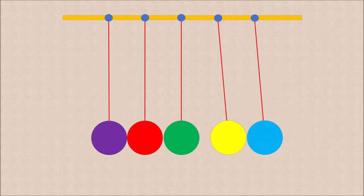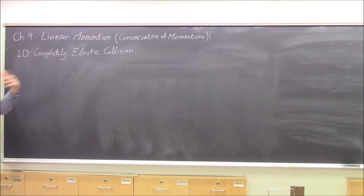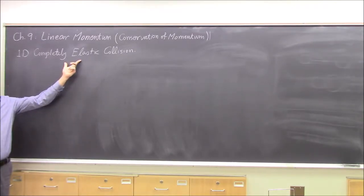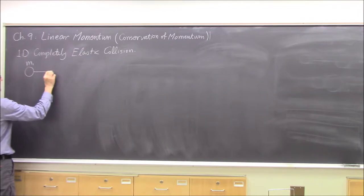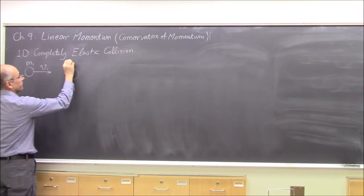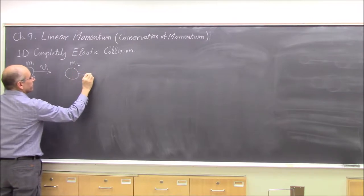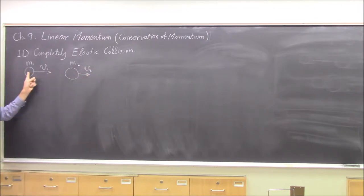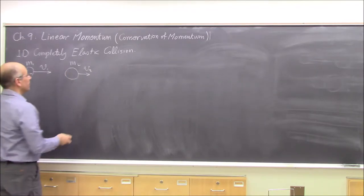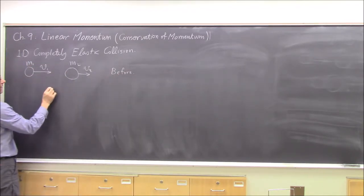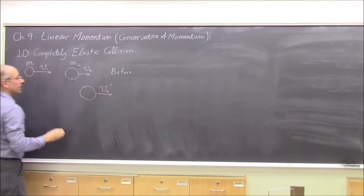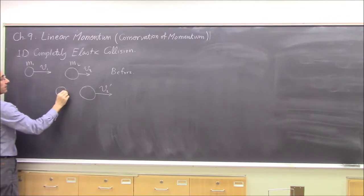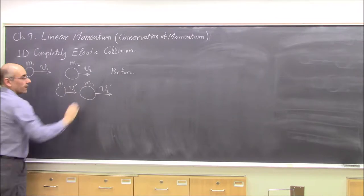Let's first get the general solution of elastic collisions in one dimension. When we have completely elastic collisions we have conservation of momentum and conservation of kinetic energy. M1 is moving at speed V1 and M2 is moving at speed V2. V2 is less than V1 so M1 catches up and hits M2. After the collision M2 is moving at V2 prime and M1 is moving at V1 prime.